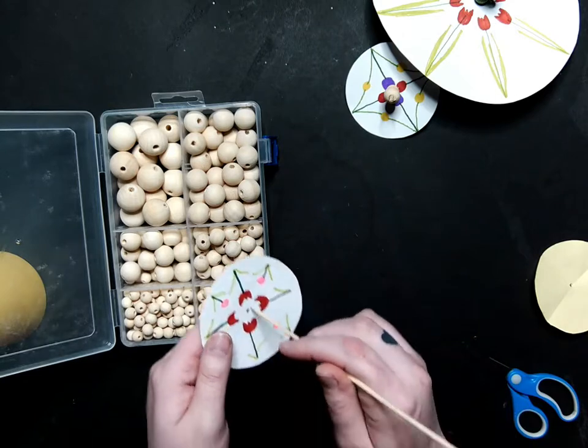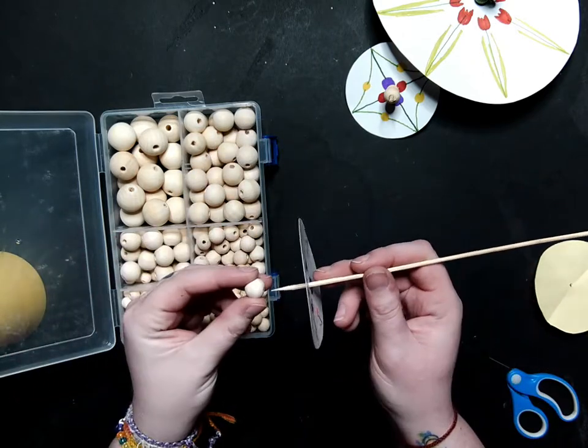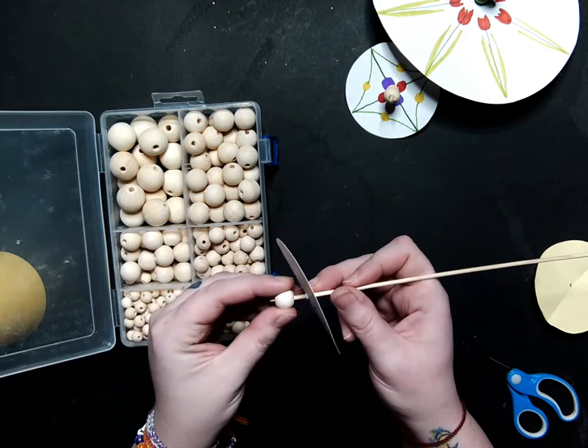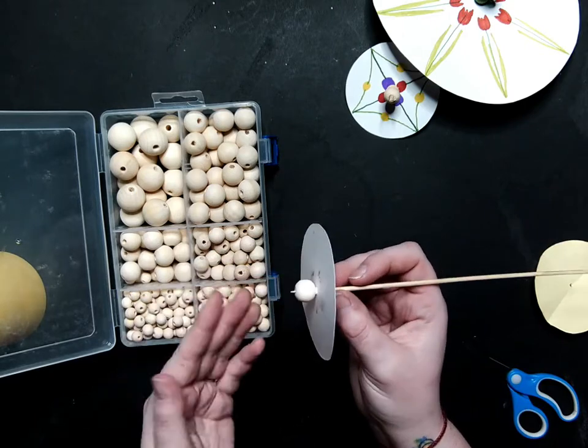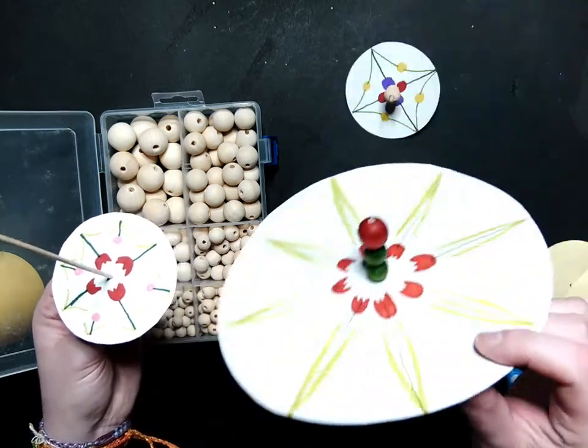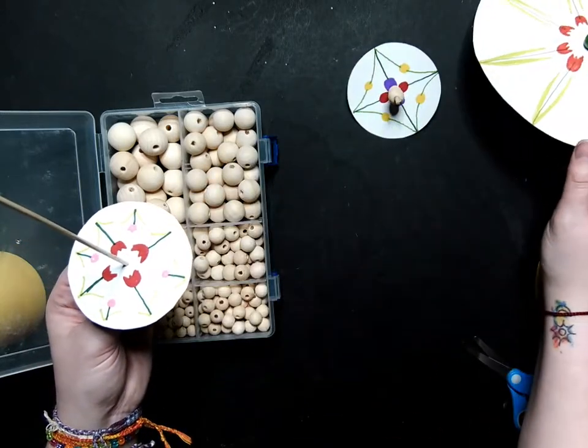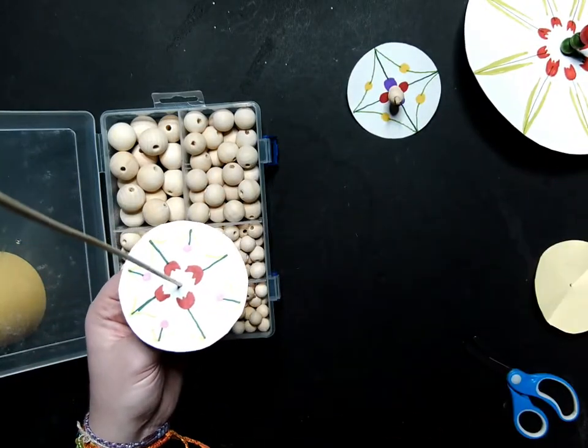So I'm going to do the same thing for this. I'm going to put my skewer through and I'm going to grab a bigger bead. And I'm going to put it here. And then I'm going to wait for my glue. And while you do that, if you like, you can color your beads with markers. I'm not going to for this one though.